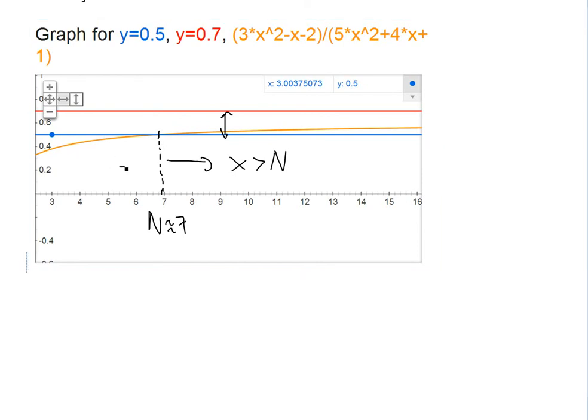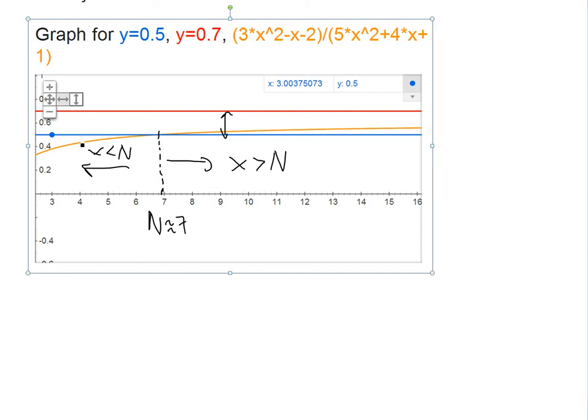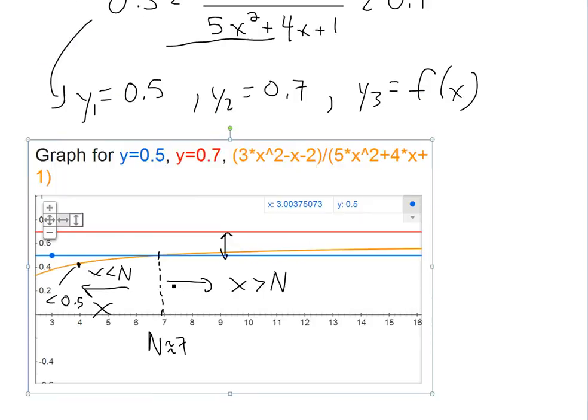When it's less than N, if we go to x < N, as you can see right here, we have this function less than 0.5, which is wrong. So it's not what our inequality is trying to find. So basically, N is around seven.